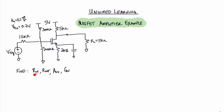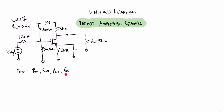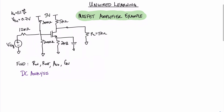We are asked to find the input resistance, the output resistance, the open circuit voltage gain, and the overall circuit gain of this circuit. As always, the first step in performing the analysis of such a circuit is to do a DC analysis.